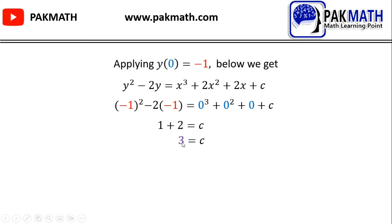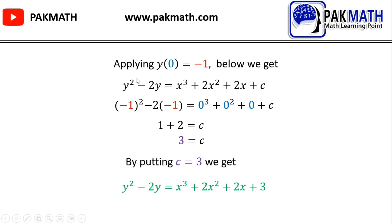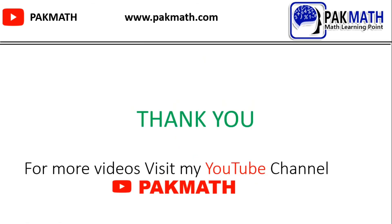Putting the value of C back into the equation, we get the final particular solution: y² − 2y = x³ + 2x² + 2x + 3. This is the final general solution.